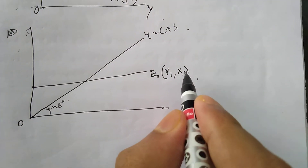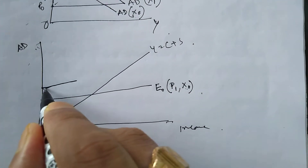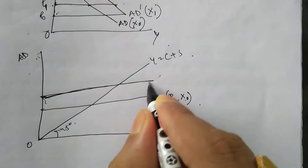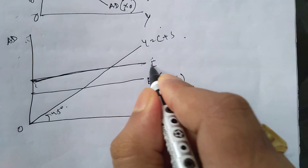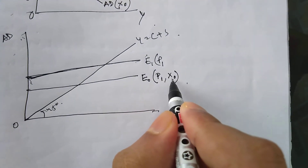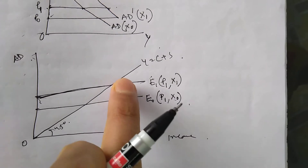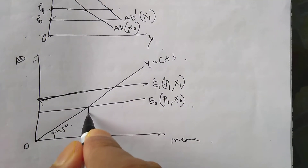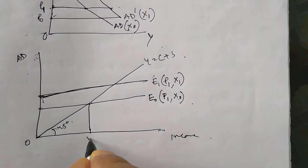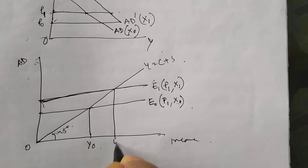Autonomous expenditure has increased — exports have risen from X naught to X1 — causing a shift in the aggregate expenditure curve from E naught to E1. Price is assumed fixed and not changing. Because of this shift, income has increased from Y naught to Y1. That is the first point of the multiplier.